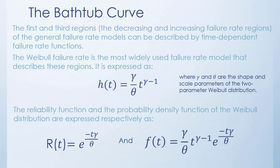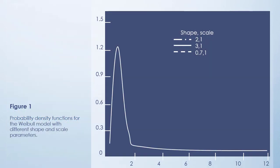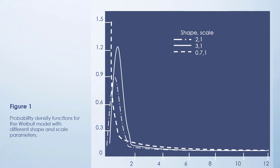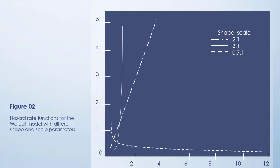The reliability function and the probability density function of the Weibull distribution are expressed respectively as R(t) = e^(−(t/θ)^γ) and f(t) = (γ/θ) · t^(γ−1) · e^(−(t/θ)^γ). The Weibull failure model describes decreasing and increasing failure rates; of course, the constant failure rate is also included. Figure 1 shows the probability density functions for the Weibull model with different shape and scale parameters. Figure 2 shows the hazard rate functions for the Weibull model with different shape and scale parameters.